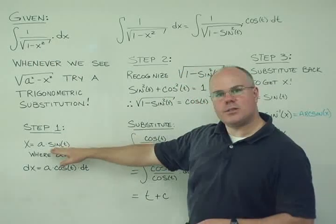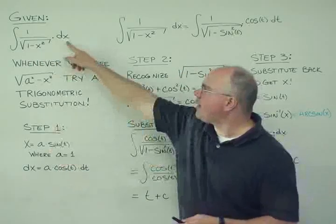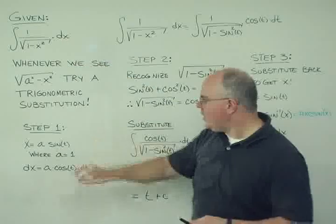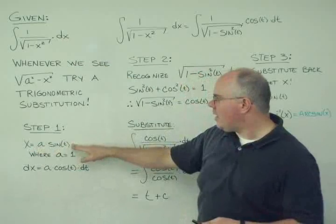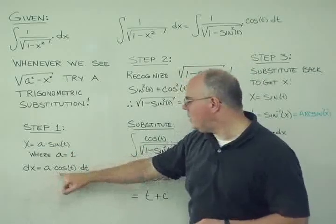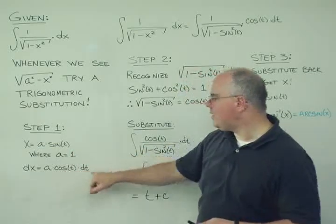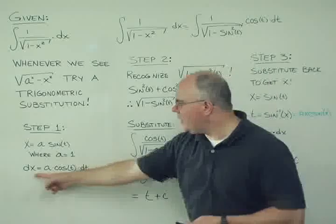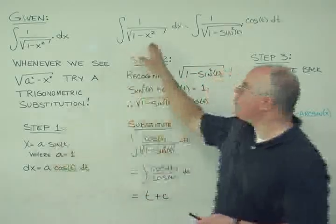And if I have this, then I also need to compute dx, because dx is part of this equation as well. So if x is equal to 1 times sine of t, then dx is equal to 1 times the cosine of t times dt. And I'm going to need this term in the future. So let's carry this forward.